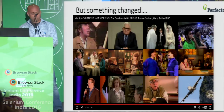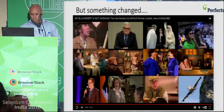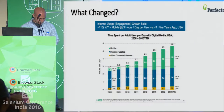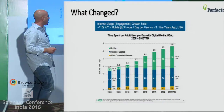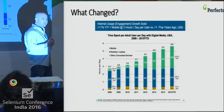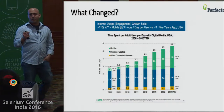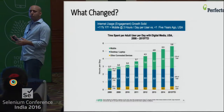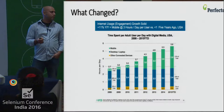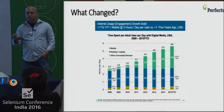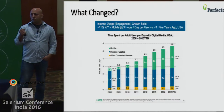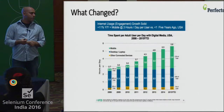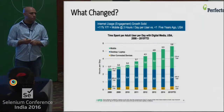There are a few things that changed. The pyramid was designed for a three-tier application where the main logic was in the backend and the client side was a thin client - the browser or any client was a thin client. So it made perfect sense to test on the backend, with unit tests and API tests making perfect sense.